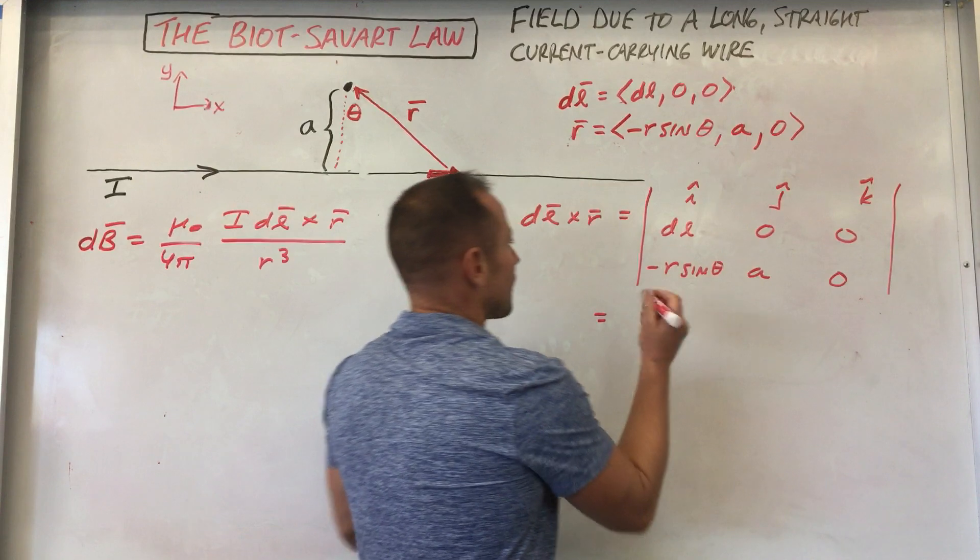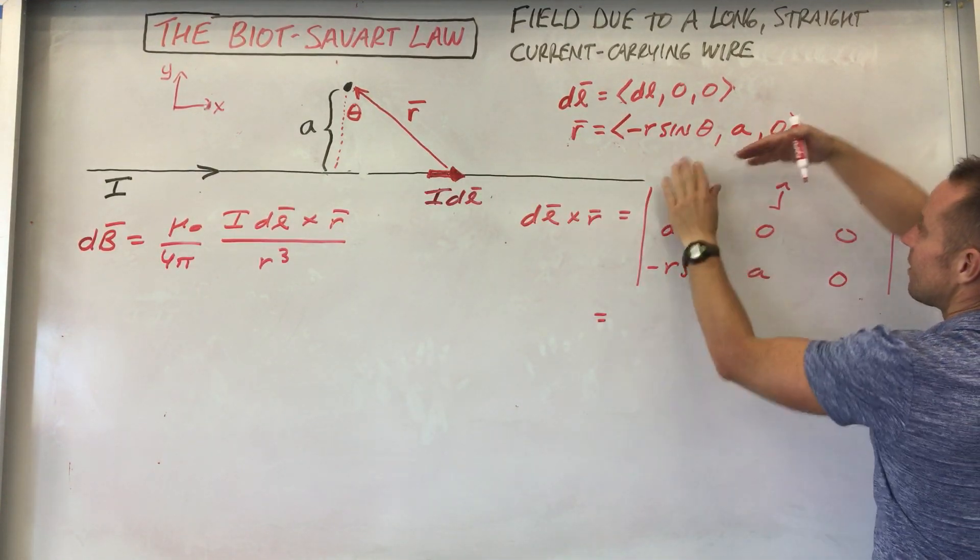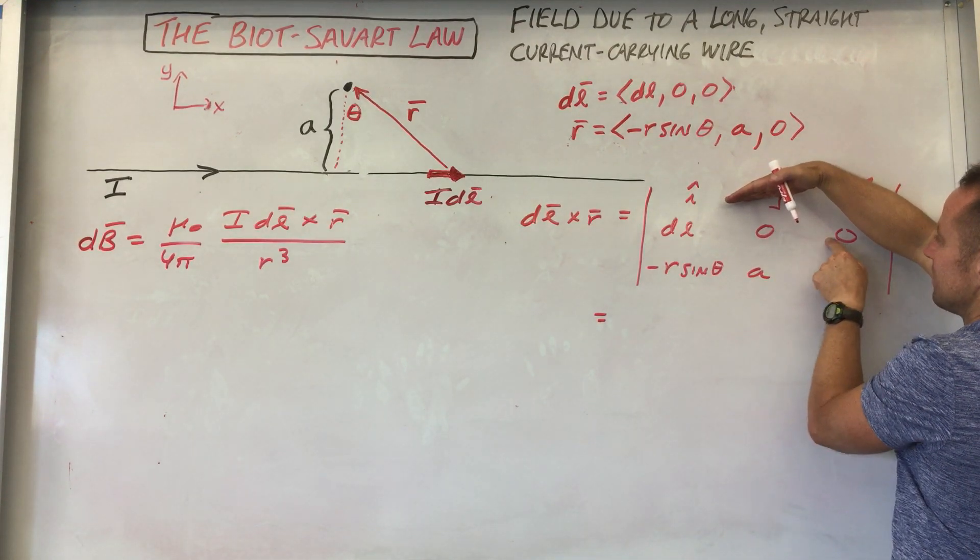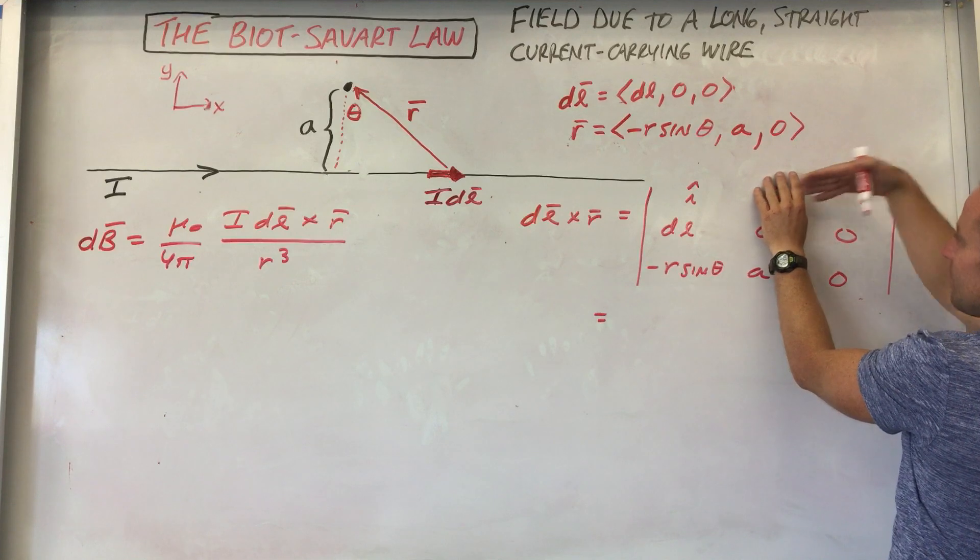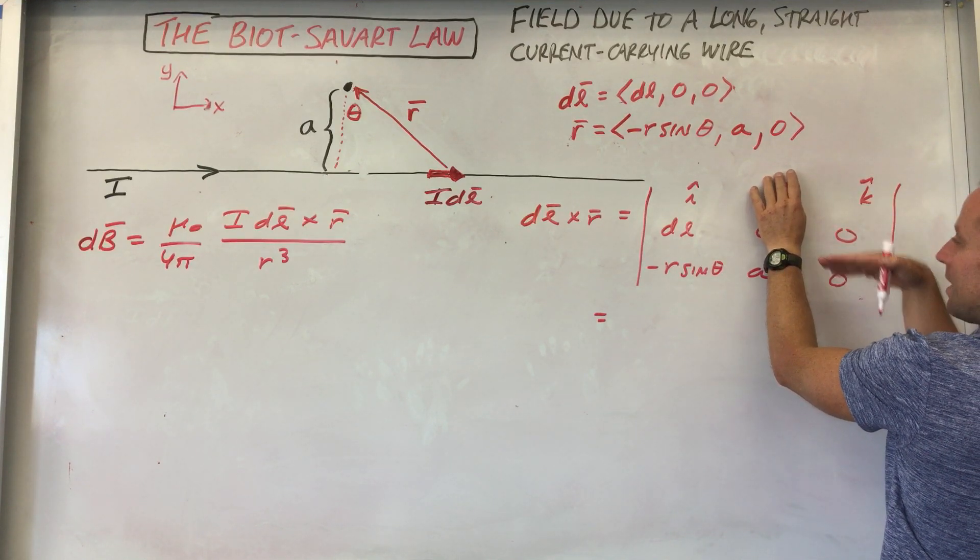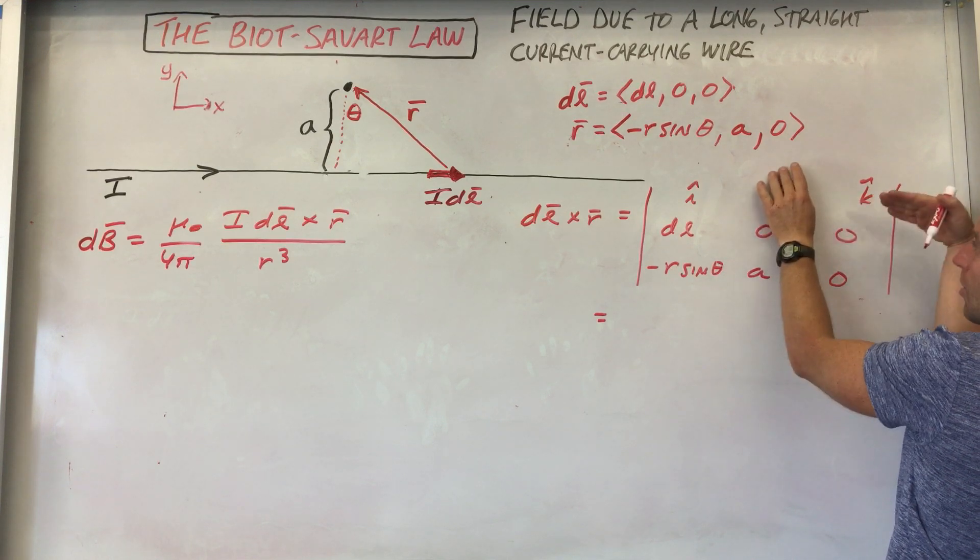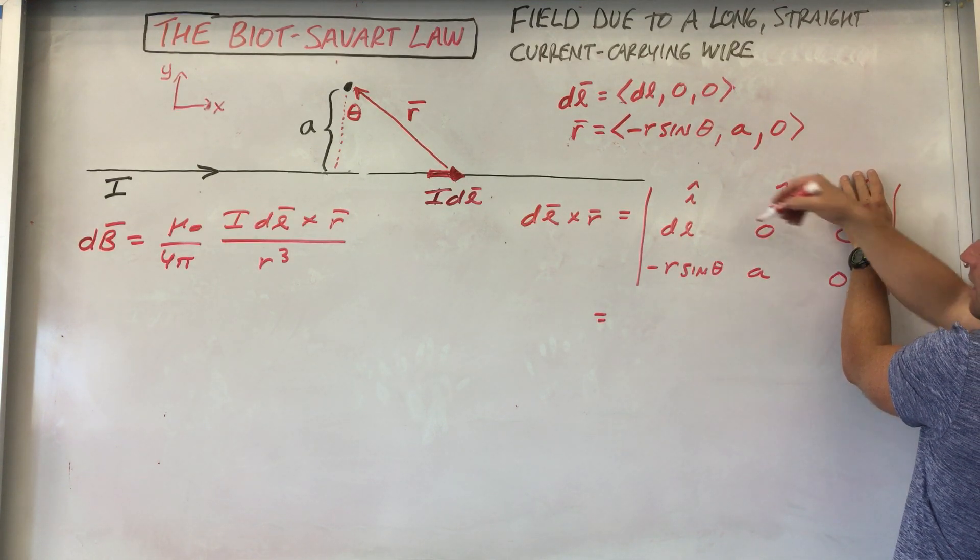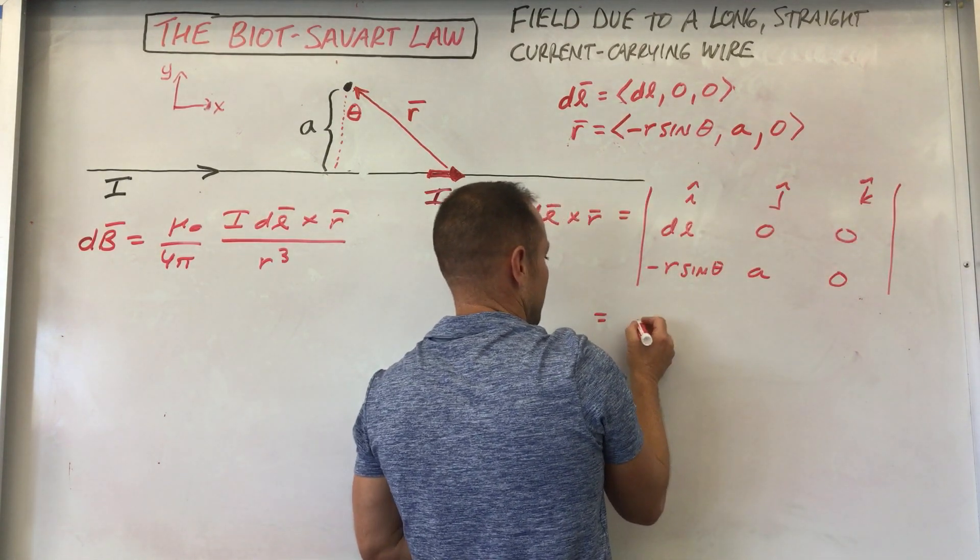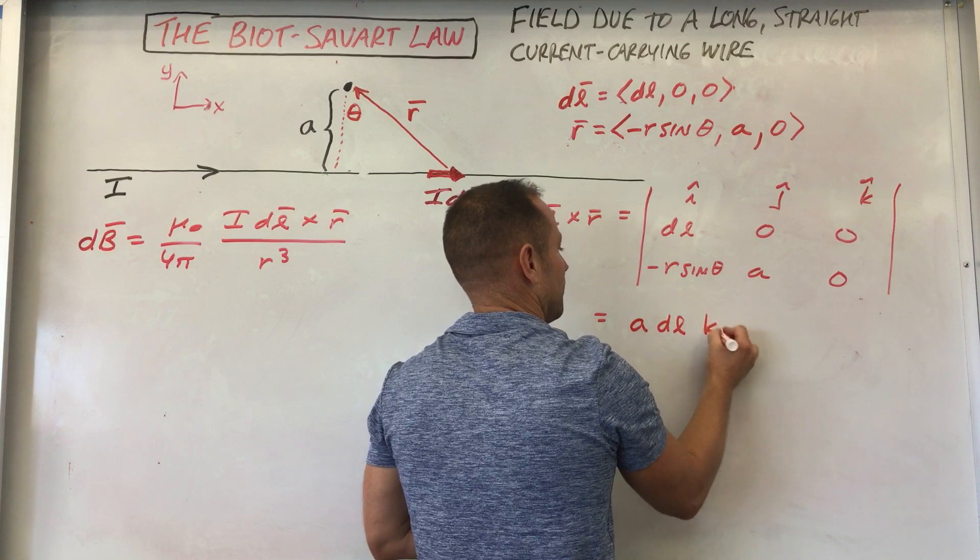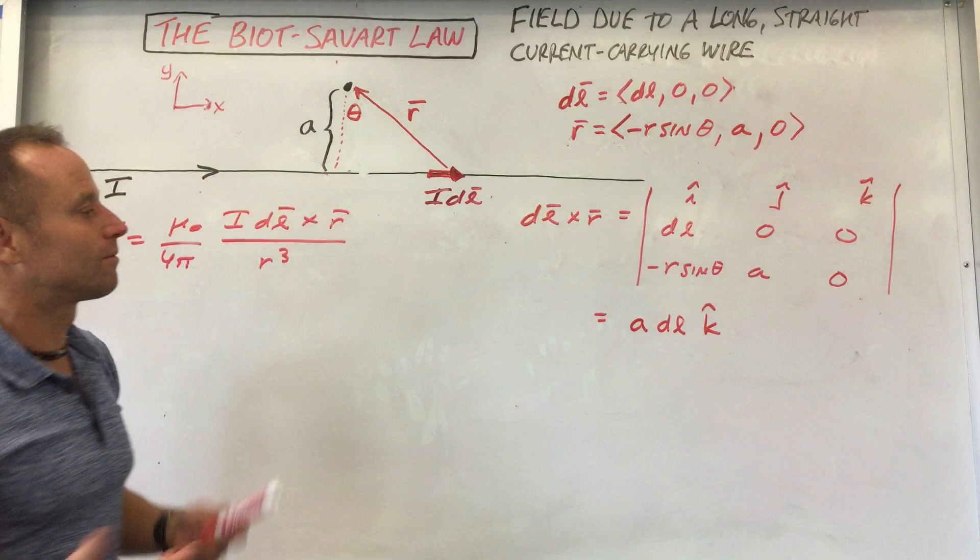So then what we want to do is, well, let's go for it. So the I hat component, right, cover the row in the column, it would be zero times zero plus zero. So nothing going on there. J hat component: DL times zero and minus R sine theta times zero. So no components going on there. Now let's do the K hat component. You notice you get ADL K hat.